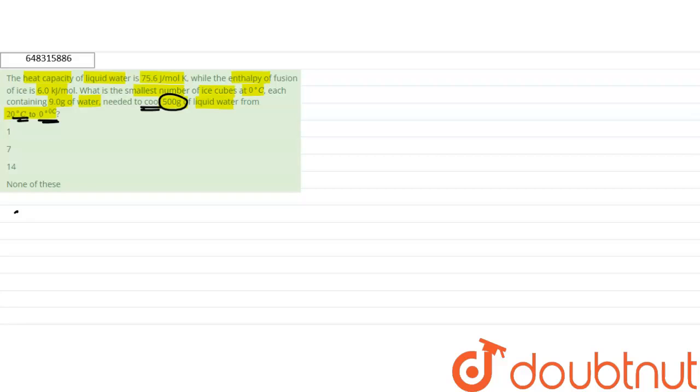So this heat is equal to n times c times delta T, which is equal to 27.78 moles times the heat capacity, which gives us 42,000 joules per mole.